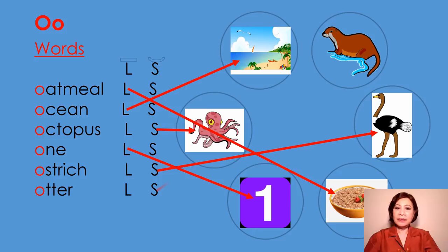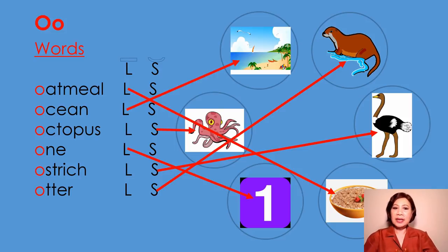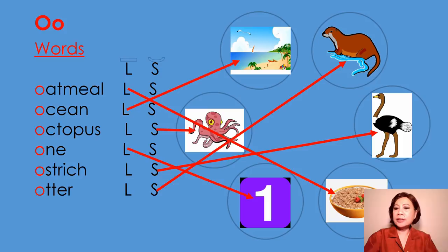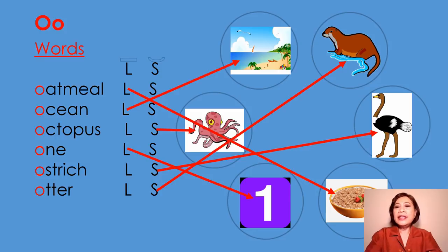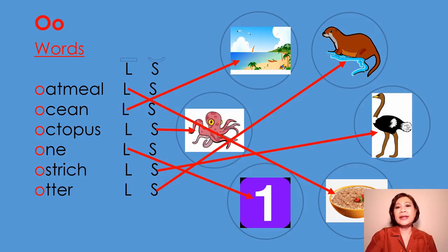O says /o/ as in otter. Otter begins with short vowel sound. Now follow along silently as I read aloud: oatmeal, ocean, octopus, otter. Listening and repeating words throughout this lesson were utilized to facilitate learning. These are essential skills for learners because they provide practice in speaking and mastery of new skills. Repeating what was heard improves speed, confidence, and a strong auditory-visual connection that helps learners begin to learn.